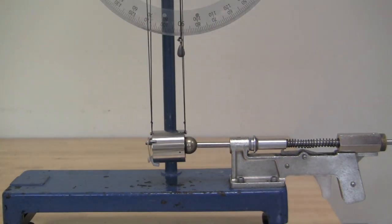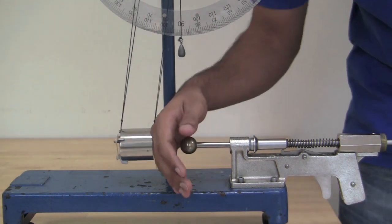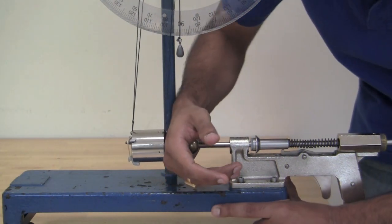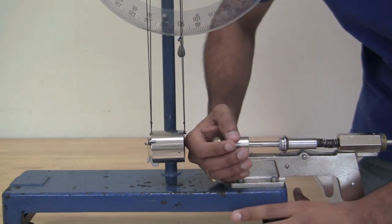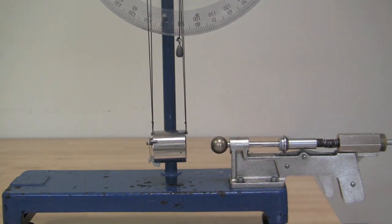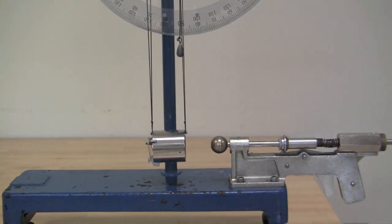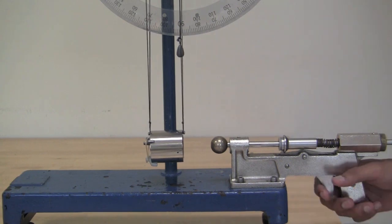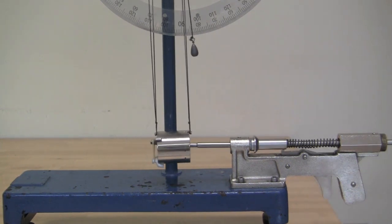Load the spring gun by placing the ball on the gun and then pushing the ball back until the spring is fully compressed. Make sure that the catcher is aligned with the gun. You can now fire the ball into the catcher.